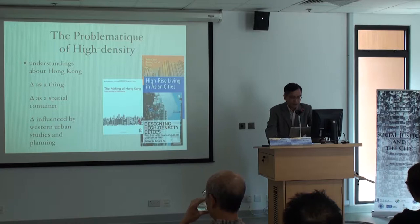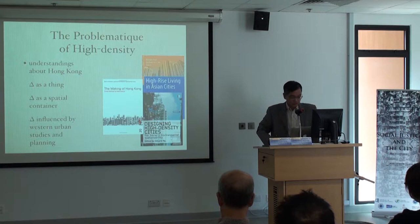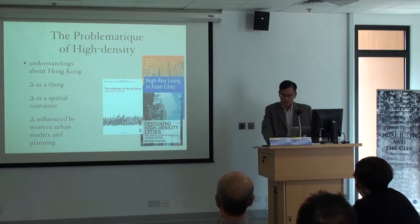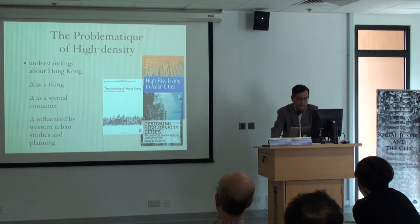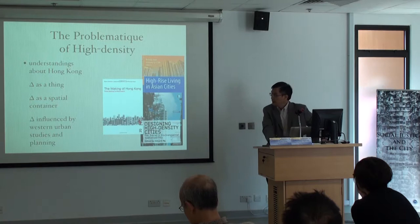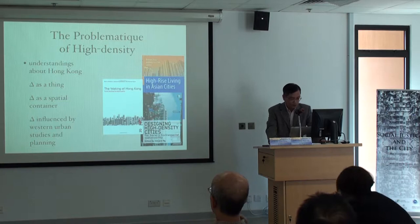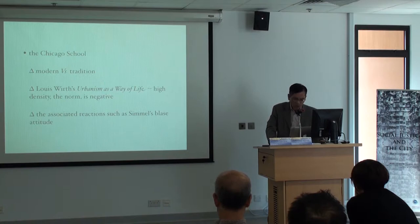There are a lot of studies on high density about Hong Kong. Nevertheless, most of them treat high density as a thing — as a technical thing — and seldom look at it from the perspective of a process. Usually it's treated as a kind of spatial container within which we see all the so-called negative features of high density. I would like to link this with the so-called urban literature in general, which has a lot to do with Western urban study and planning literature.